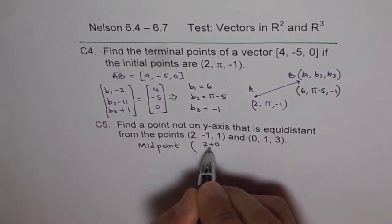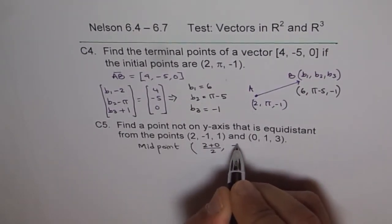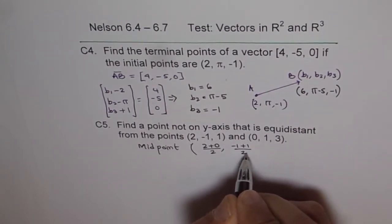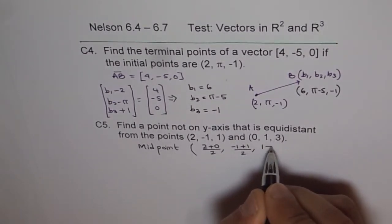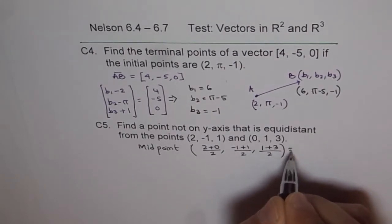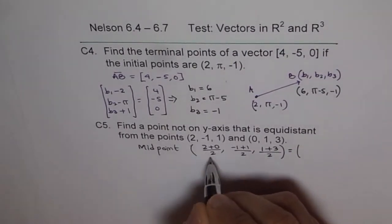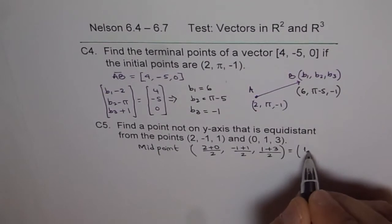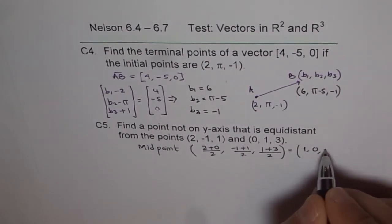So midpoint will be sum of these divided by 2. So 2 plus 0 divided by 2, -1 plus 1 divided by 2, and 1 plus 3 divided by 2. And this point happens to be 1, this is 0, 4 by 2 is 2.